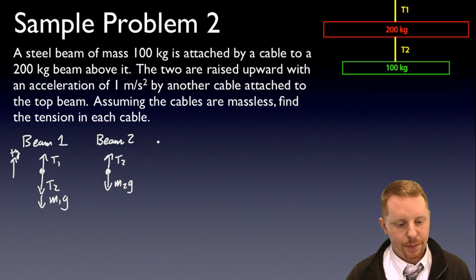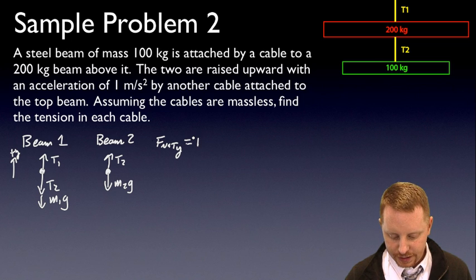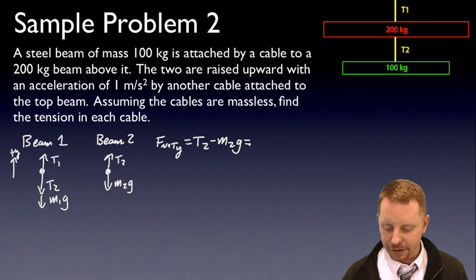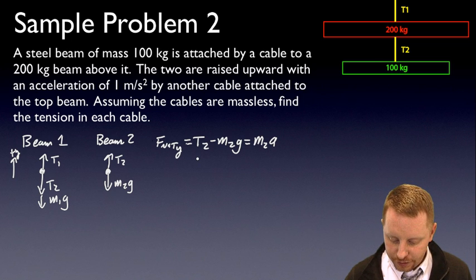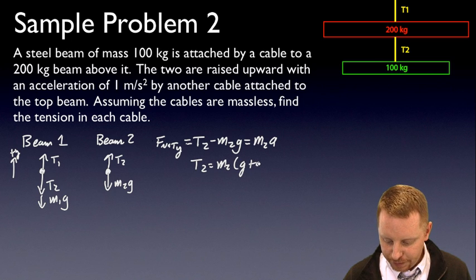So, if I start over here with beam 2, I could say that the net force in the y direction is going to be T2 minus M2g, and that has to equal Ma. In this case, our mass is M2, and the acceleration, of course, is going to be in our y direction. Or, solving for T2, T2 equals M2 times (G plus A).